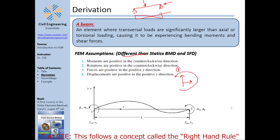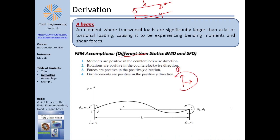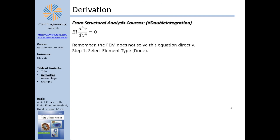The finite element method sign convention is different from the statics bending moment diagram and shear force diagram assumptions — and this will become relevant later. On one side you have counterclockwise and shear down as positive, and on the other side clockwise and shear up as positive for the shear force and bending diagrams. This distinction will become significant later, so keep it in mind.